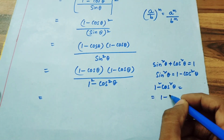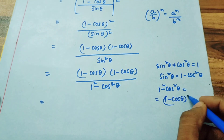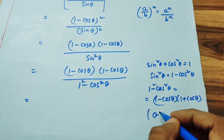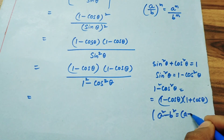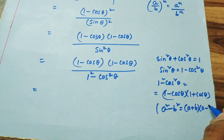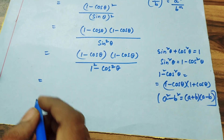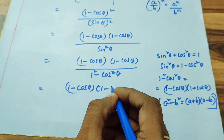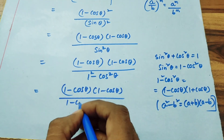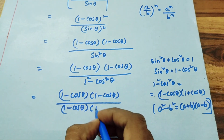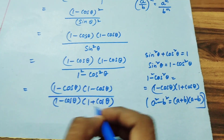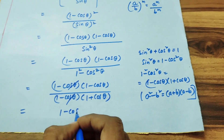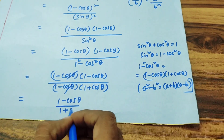Using the identity a² − b² = (a + b)(a − b), we can write 1 − cos²θ as (1 − cos θ)(1 + cos θ). So we have (1 − cos θ)(1 − cos θ) divided by (1 − cos θ)(1 + cos θ). The common factors (1 − cos θ) cancel, leaving us with (1 − cos θ)/(1 + cos θ).